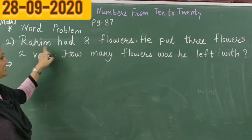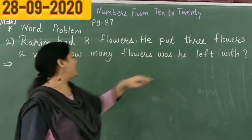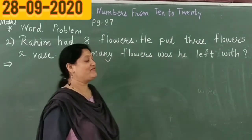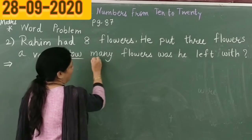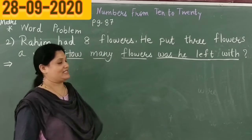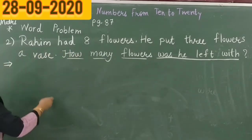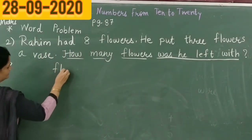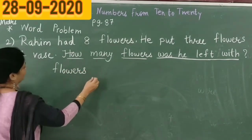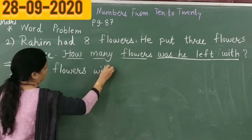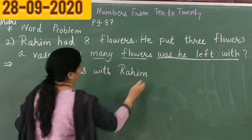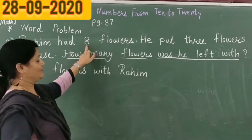The next problem is: Raheem had 8 flowers. He put 3 flowers in a vase. How many flowers was he left with? We have to find out this. Flowers with Raheem — how many flowers with Raheem? 8.